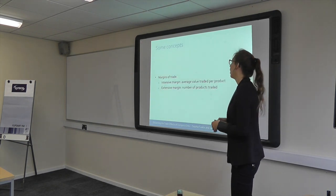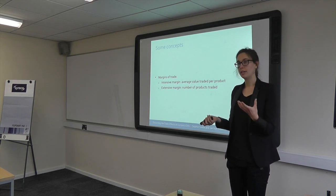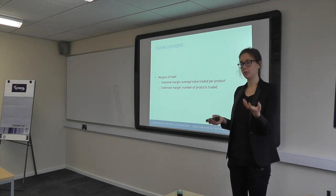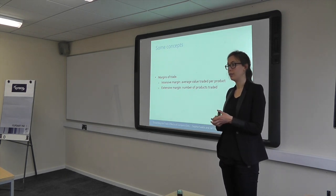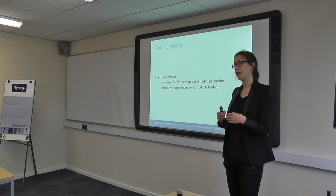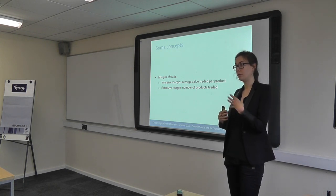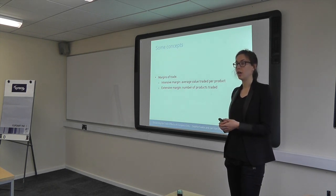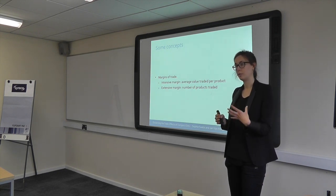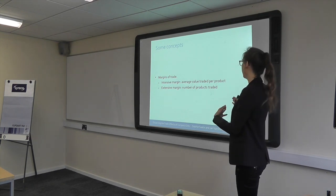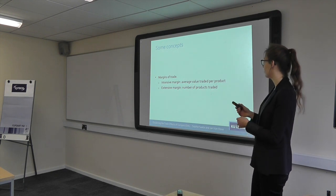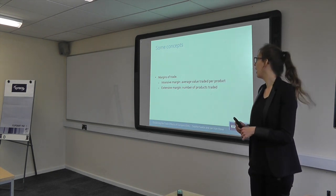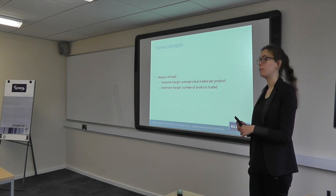Now, the margins of trade. We're interested in how trade changes due to trade agreements. When trade increases, it can be caused by two things: first, the number of products being exported could go up, or the average value exported per product could go up. We try to disentangle both. The intensive margin is the average value per product, and the extensive margin is the number of products.